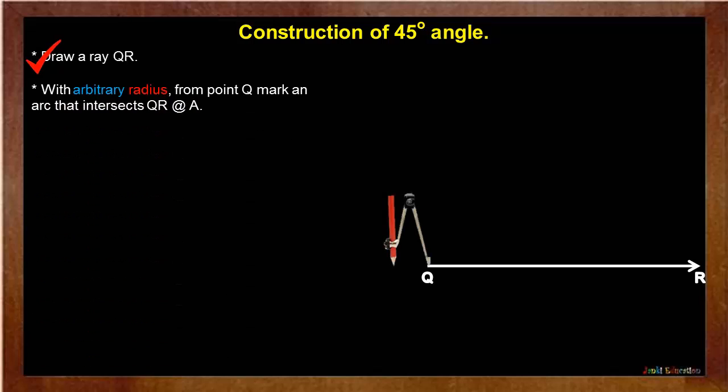Next, with arbitrary radius from point Q, mark an arc that intersects QR at A.